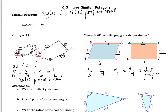But are the angles congruent? It looks like on the figure on the right, all the angles appear to be right angles — that is certainly not true of the figure on the left. So the angles are not congruent. This means that the figures are not similar. The sides are proportional, but the angles are not congruent.